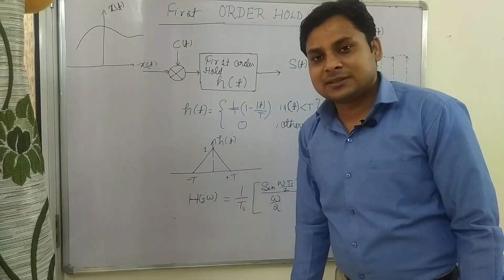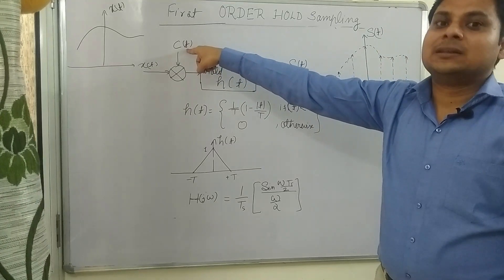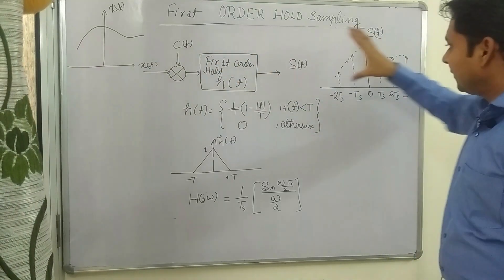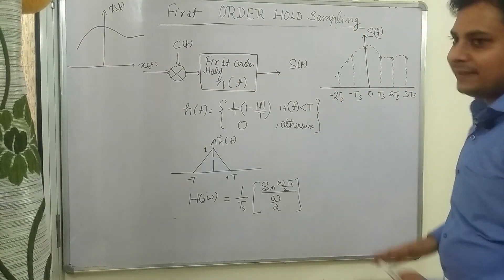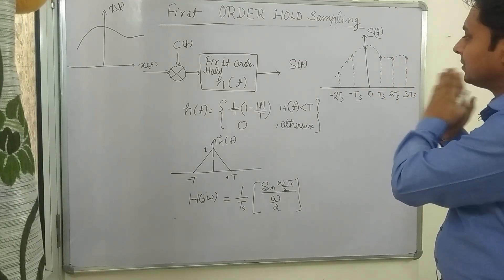x(t). I have taken this continuous time signal x(t) and mixed it with c(t) impulse train, so it will give a function like this you are watching here. It will give the samples of this continuous function.